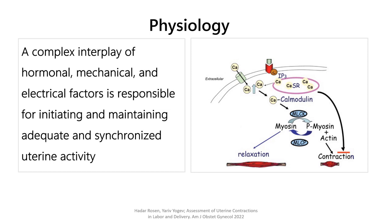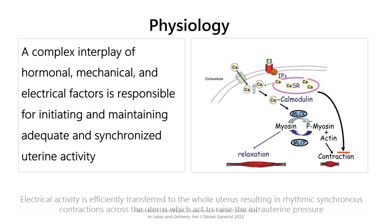This ultimately results in a muscle contraction. The propagation of this electrical activity is facilitated by gap junctions composed of connexin proteins that provide channels of low electrical resistance. Gap junctions increase in number prior to the onset of labor, creating a pathway for efficient conduction of action potentials.